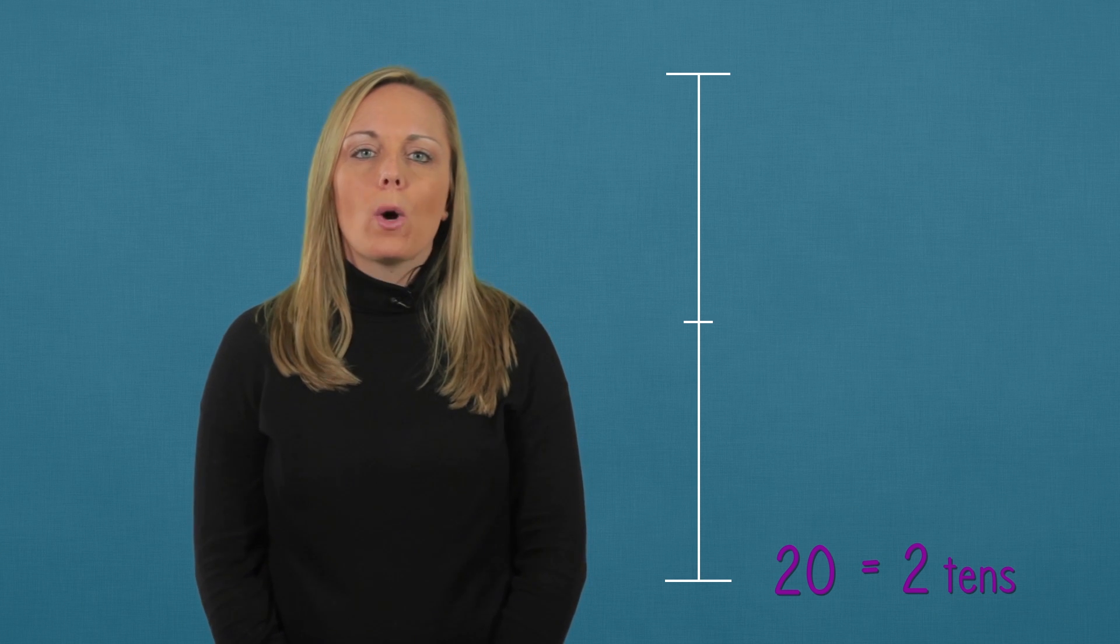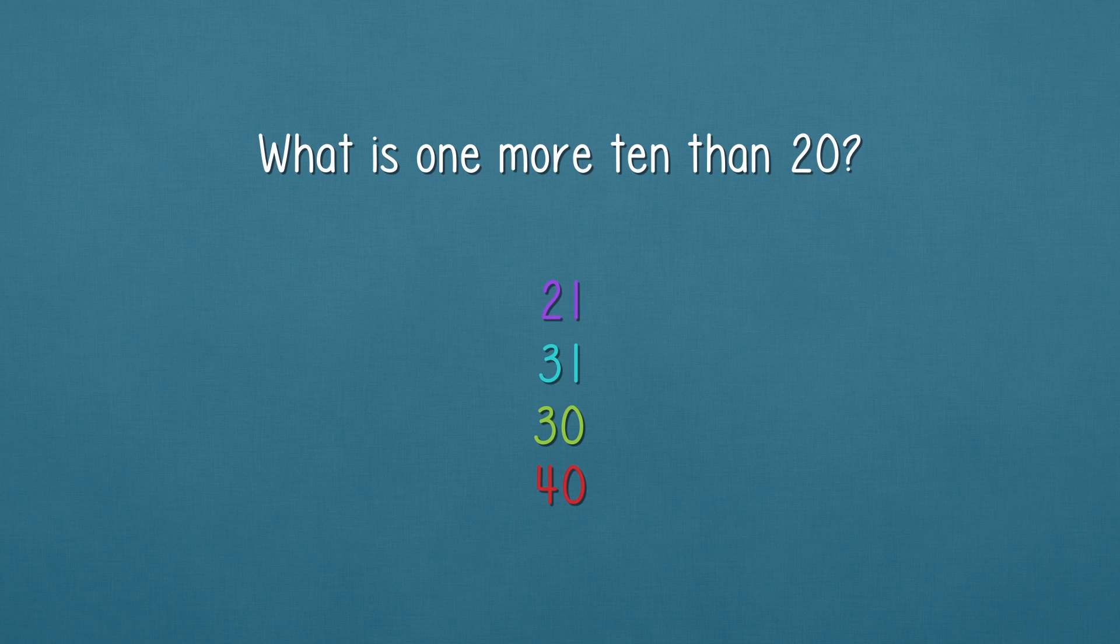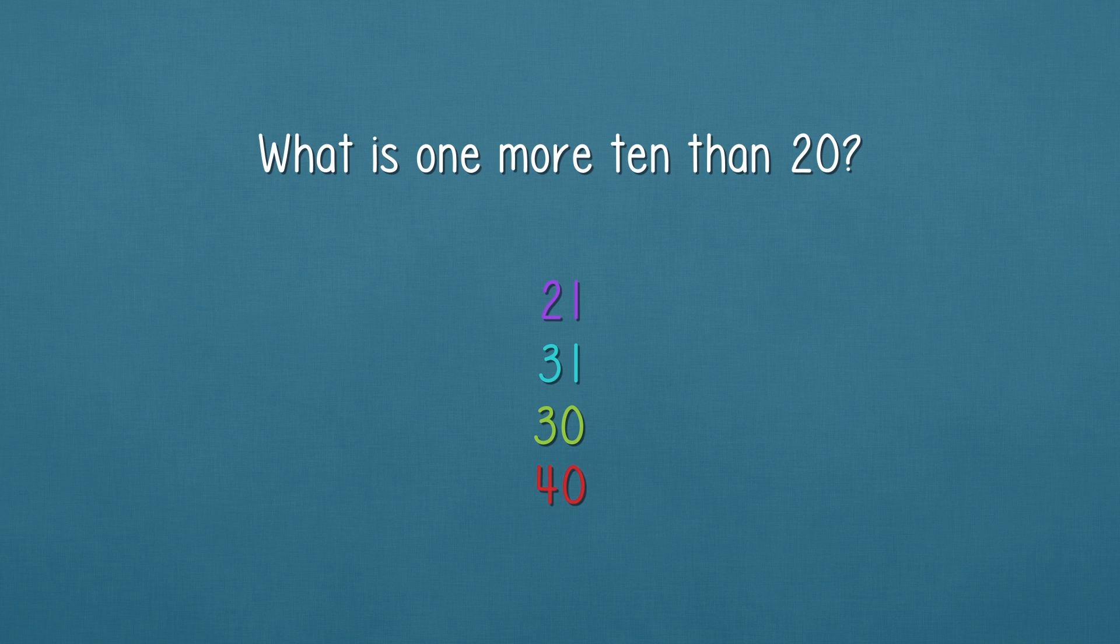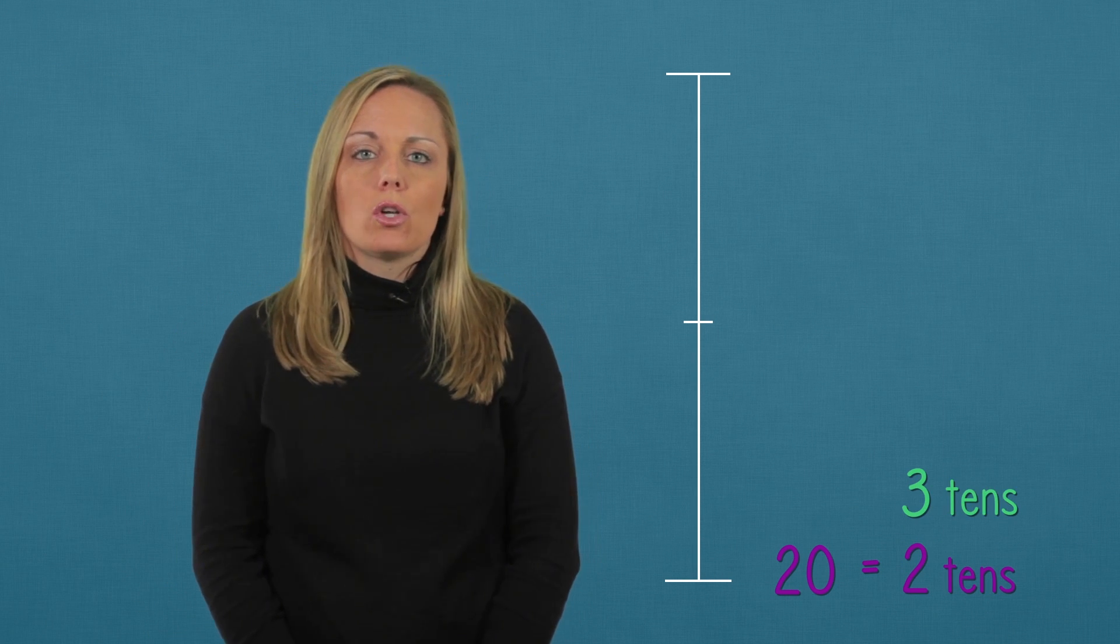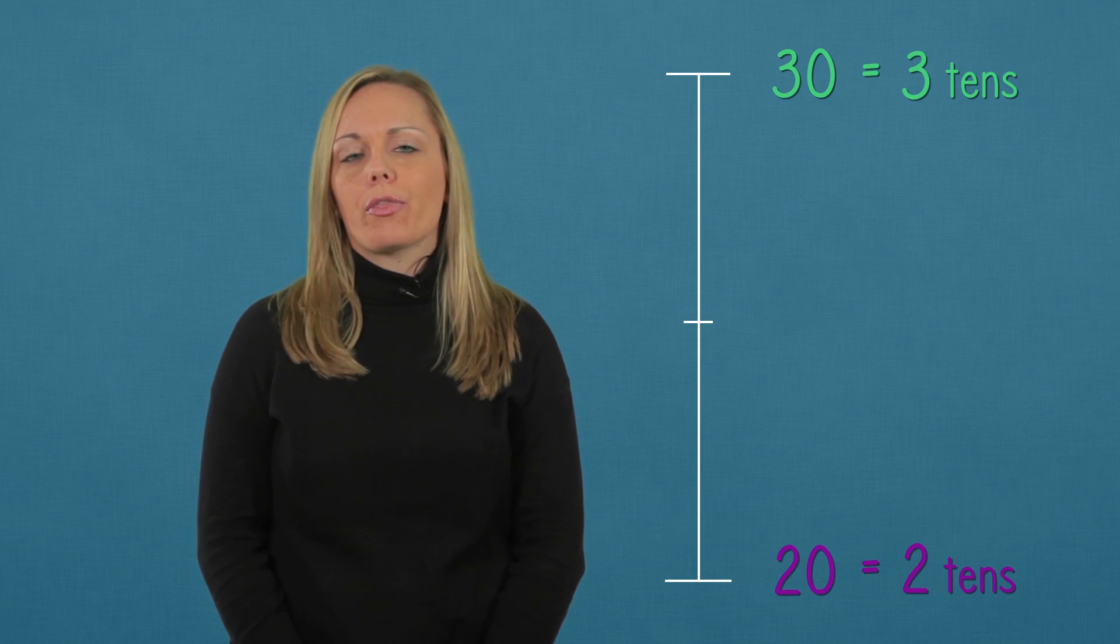Now to make this top mark, what's one more 10 than 20? We'll add another 10 to the tens column. That gives us three tens in total. So on this top mark, we label 30 or three tens.